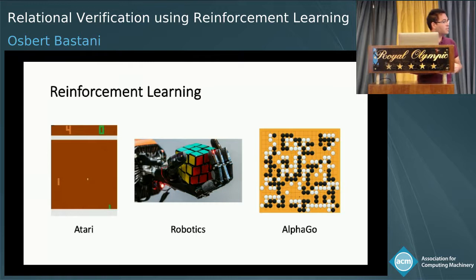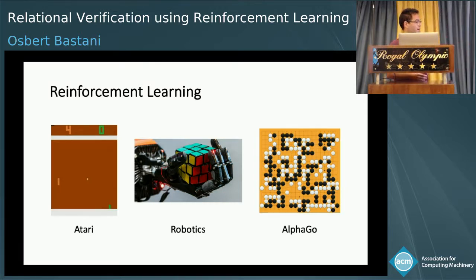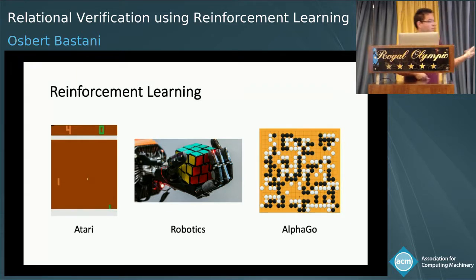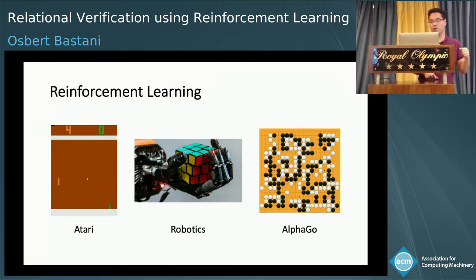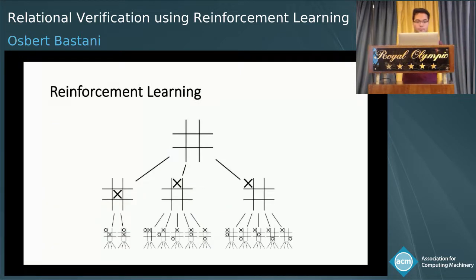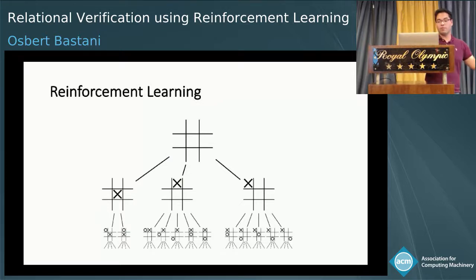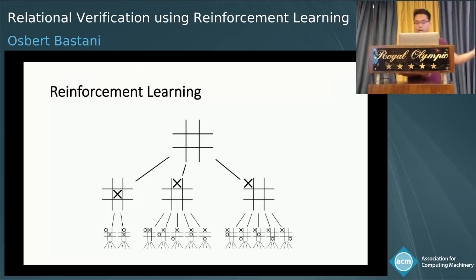Reinforcement learning is a technique used to solve a number of challenging AI tasks, including things like Atari Pong, robot manipulation tasks, and perhaps most famously, it was recently used to solve the game Go. At their core, all of these problems are really search problems. For example, in the case of games, the goal is to look for some strategy for playing the game that wins with high probability.